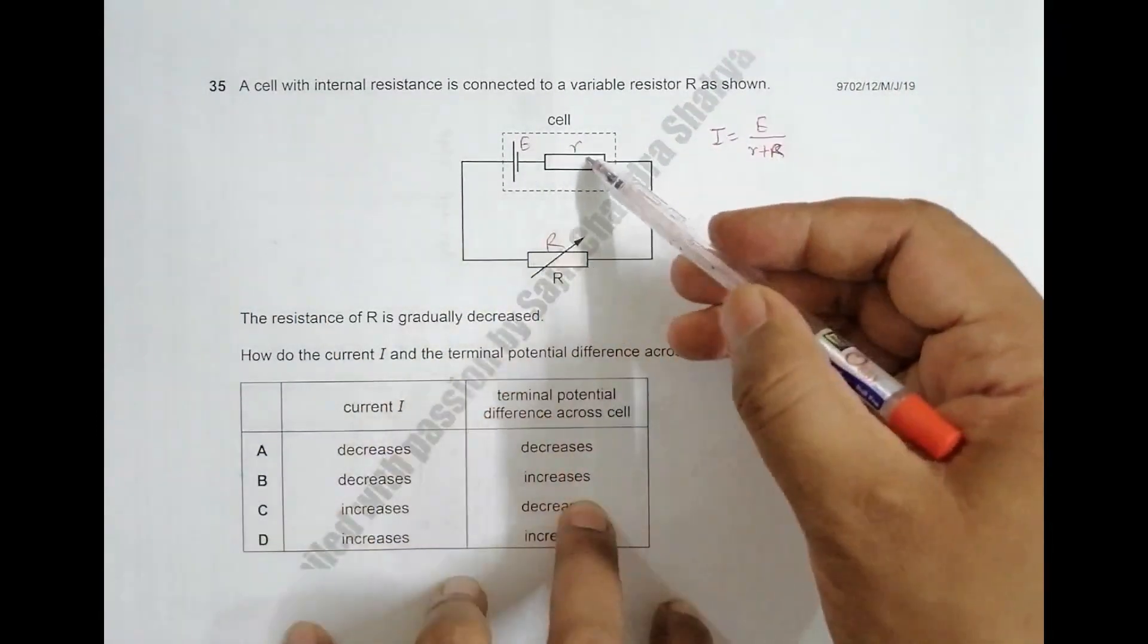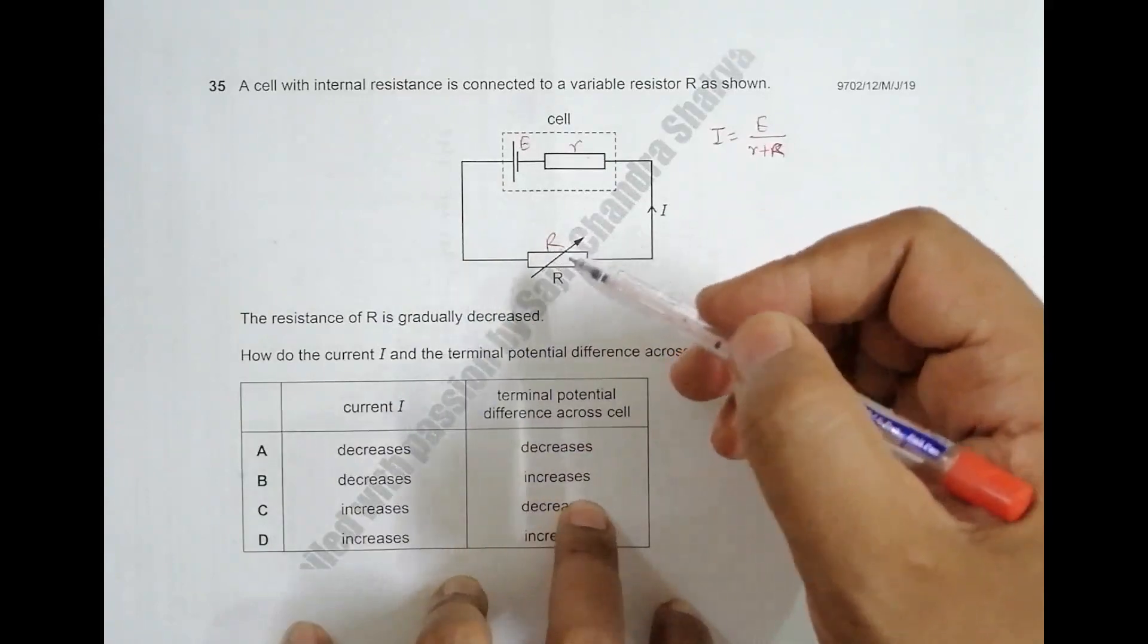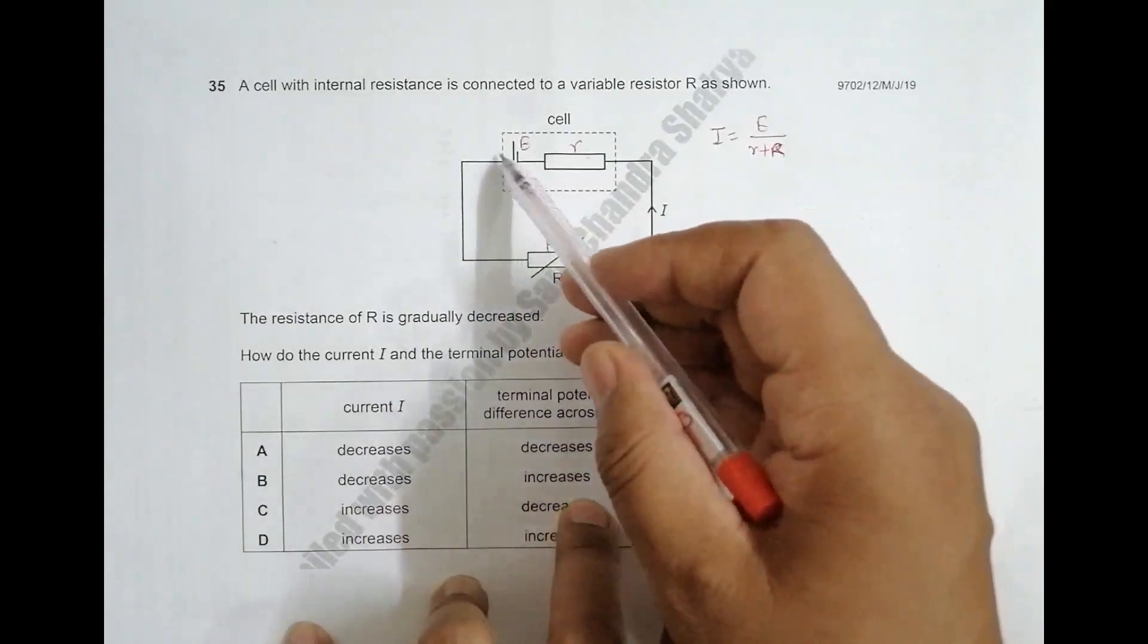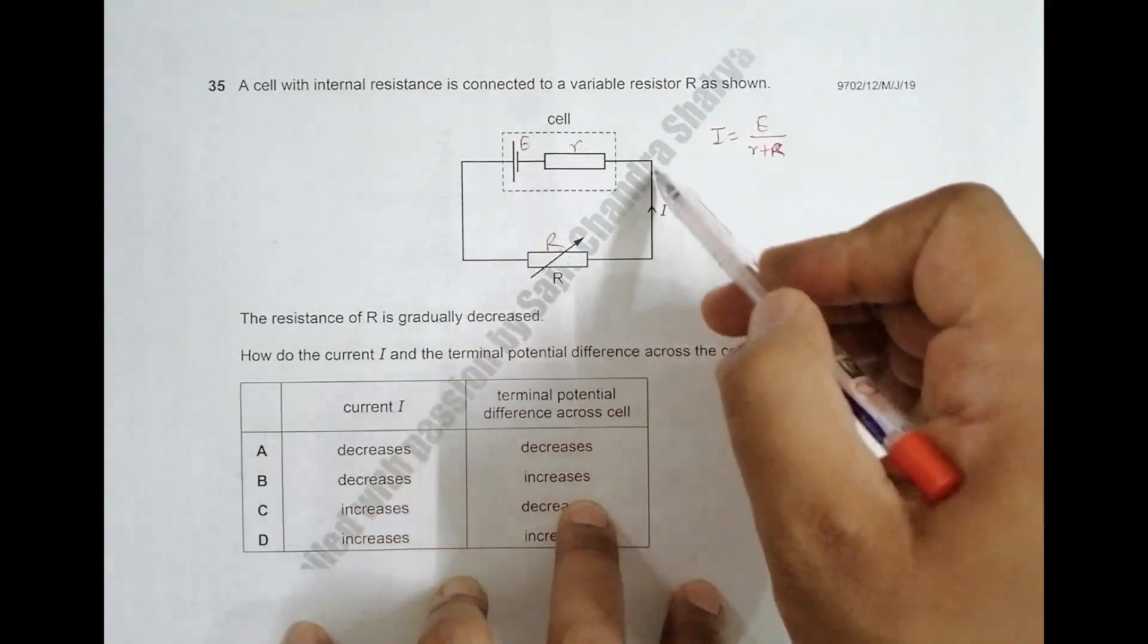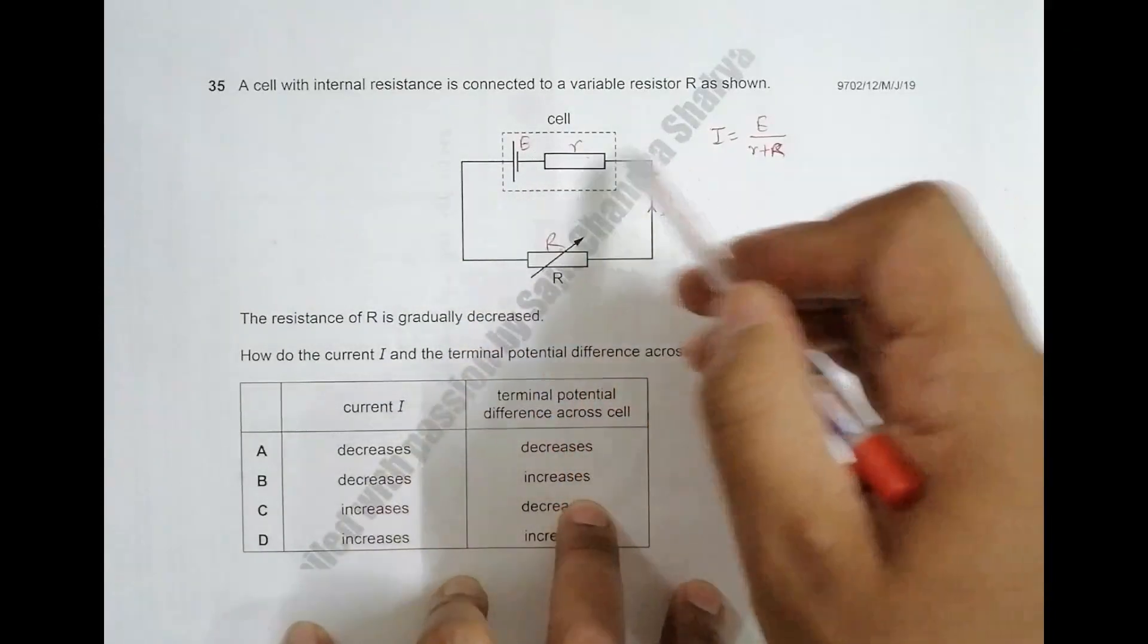One thing you have to remember is this resistance and this internal resistance are in series, not in parallel. They're in series because the current that flows here will flow through here. The charges that go through here will go through here.